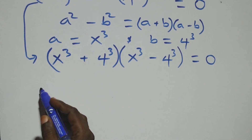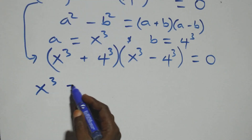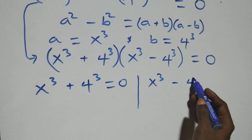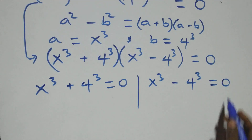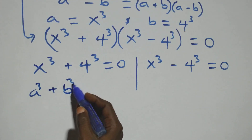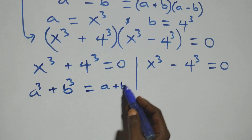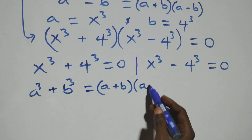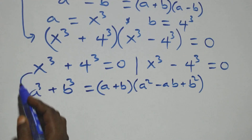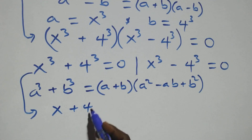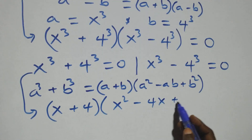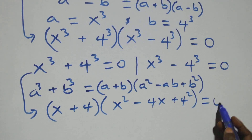Here we have x raised to the power 3 plus 4 raised to the power 3, or x raised to the power 3 minus 4 raised to the power 3 equals to 0. Solving the sum of cubes using the identity a cubed plus b cubed equals a plus b times a squared minus ab plus b squared, this becomes x plus 4, times x squared minus 4x plus 4 squared, equals to 0.